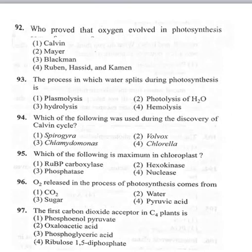97th bit: the first carbon dioxide acceptor in C4 plants is — option 1 phosphoenol pyruvate, option 2 oxaloacetic acid, option 3 phosphoglyceric acid, option 4 ribulose 1,5-diphosphate. This is a repeated bit. The first CO2 acceptor in C4 plants is phosphoenol pyruvic acid (PEP), and in C3 plants it is RuBP. Correct option is phosphoenol pyruvic acid.